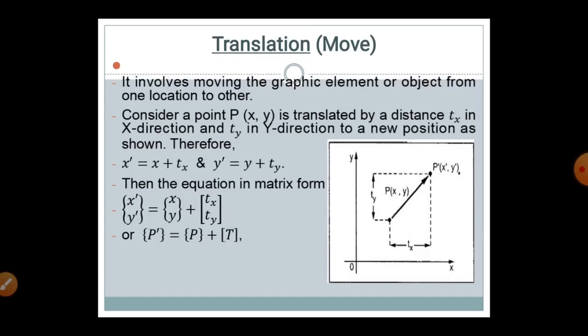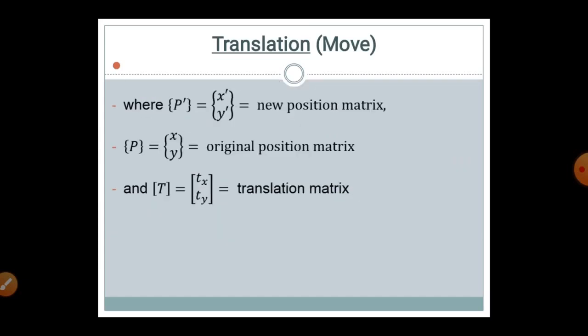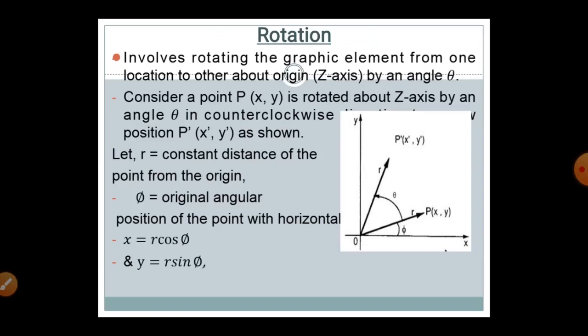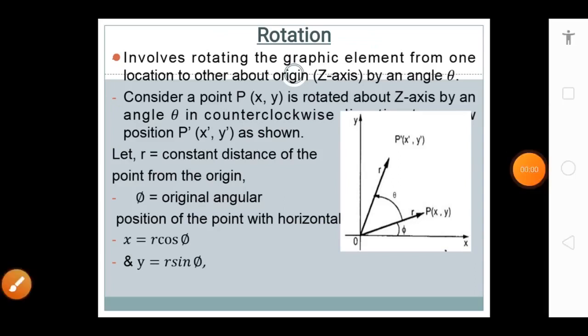The translated point P' equals the original point P plus the transformation matrix T. Here P' = [x', y'] is the new position matrix, P = [x, y] is the original position matrix, and T = [tx, ty] is the translation matrix.